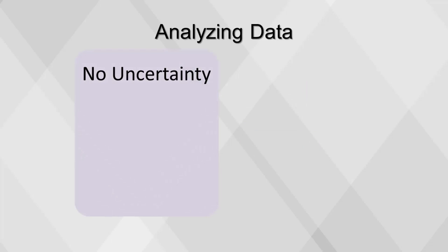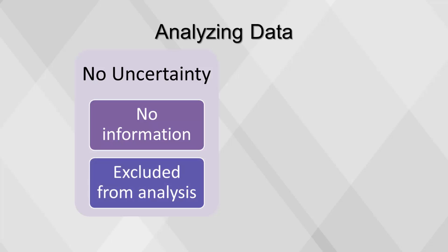If there is no uncertainty for a variable, then there is no information. If we obtained a new observation, we would already know the value of that variable. Typically, variables with only one value are excluded from an analysis at the very beginning.